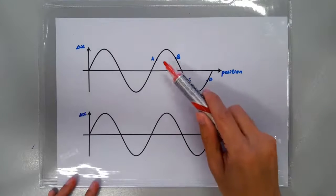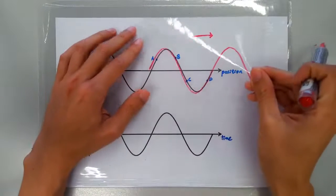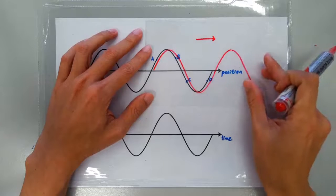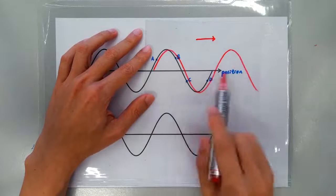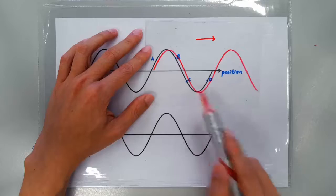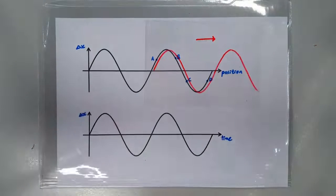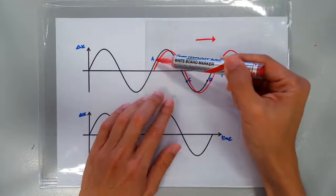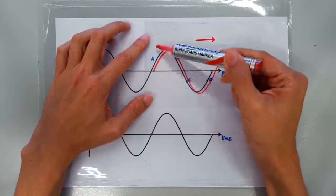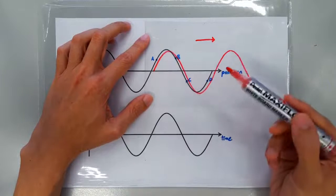So if at this instance the wave profile looks like this, the next instance the wave profile will have progressed and it may look something like this. Now remember, each point in the wave is just doing its own oscillation up and down about its equilibrium position.